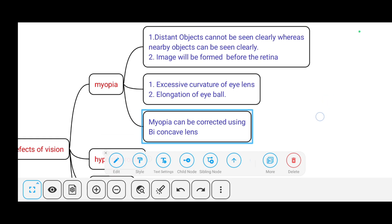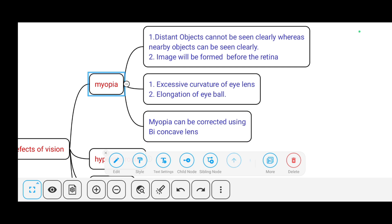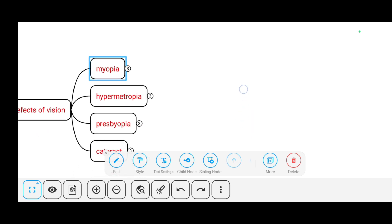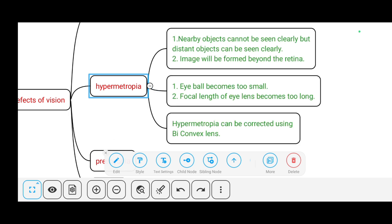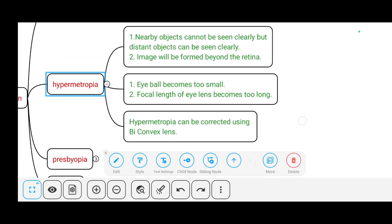Now let us move to the second defect of vision, which is hypermetropia. What is hypermetropia? For a hypermetropic person, nearby objects cannot be seen clearly but distant objects can be seen clearly, because the image will be formed beyond the retina.